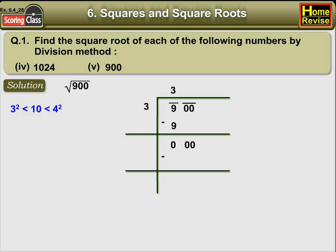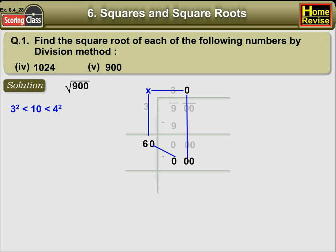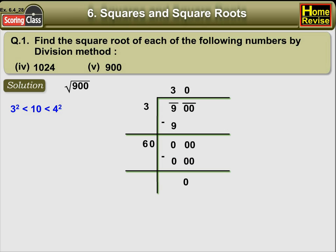Our new dividend is 000. Now, double the divisor and enter it with a blank on its right. Guess the largest possible digit to fill the blank, which also becomes the new digit in the quotient, such that when the new number is multiplied to the new quotient, the product is less than or equal to the dividend. In this case, 60 into 0 is equal to 000. So, the new digit in the quotient is 0, and obviously, you get your remainder 0. Since the remainder is 0, therefore, square root of 900 is equal to 30.